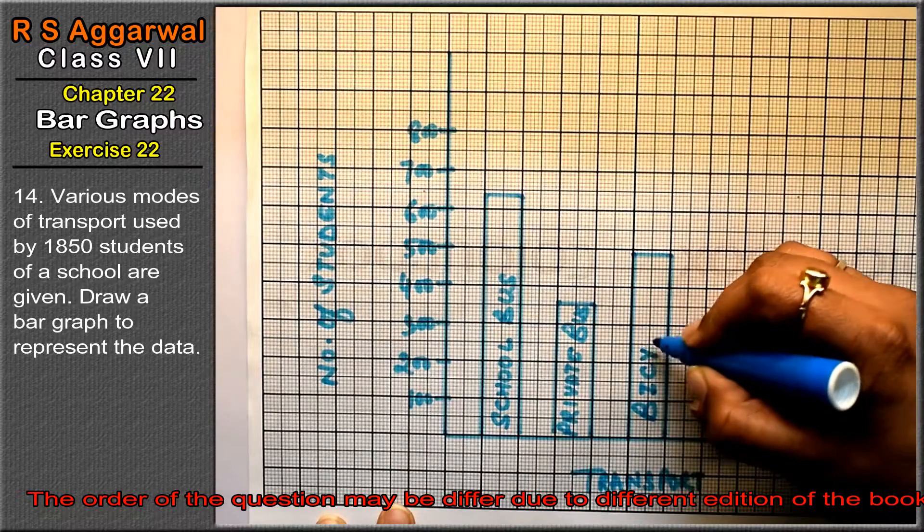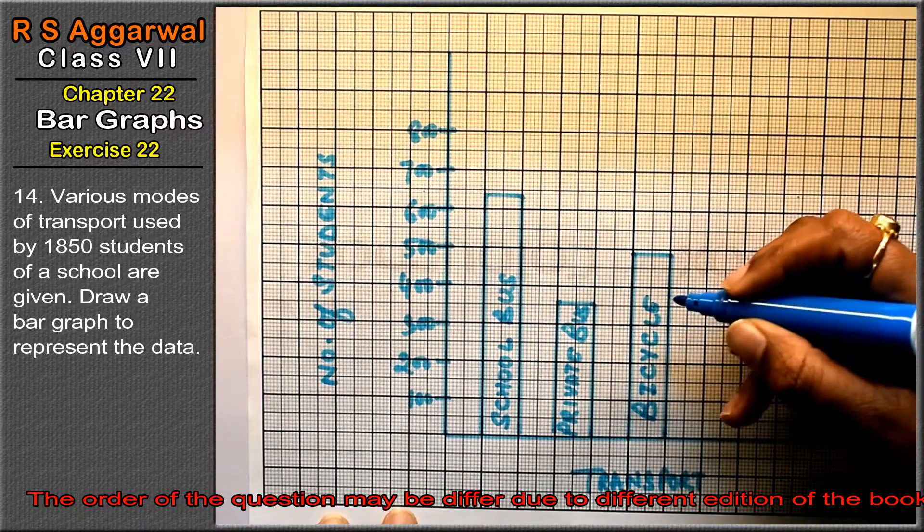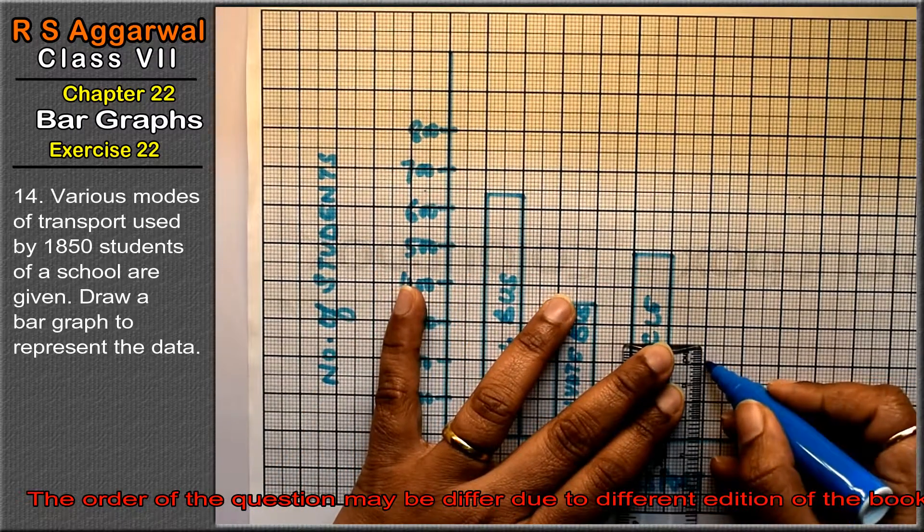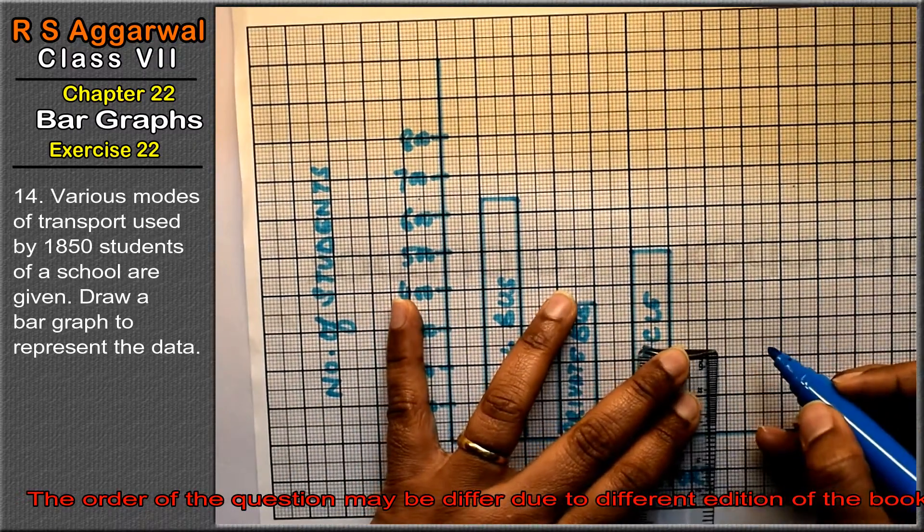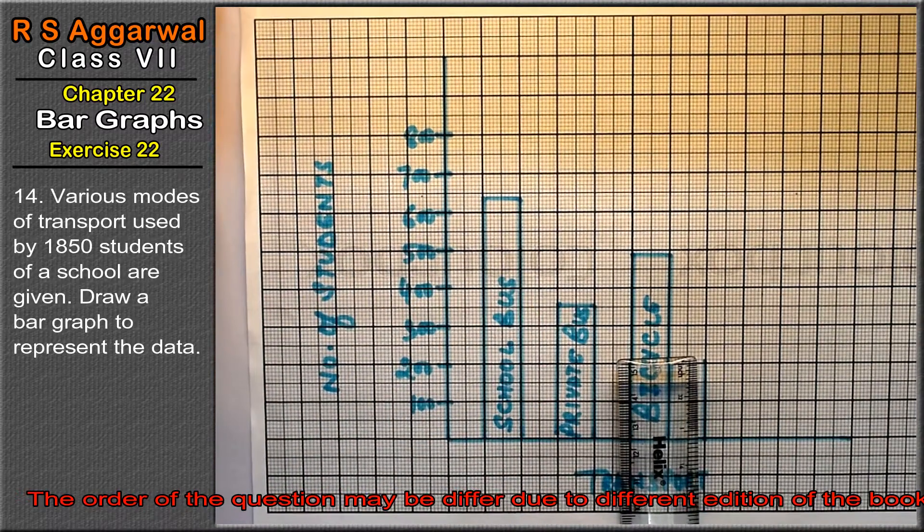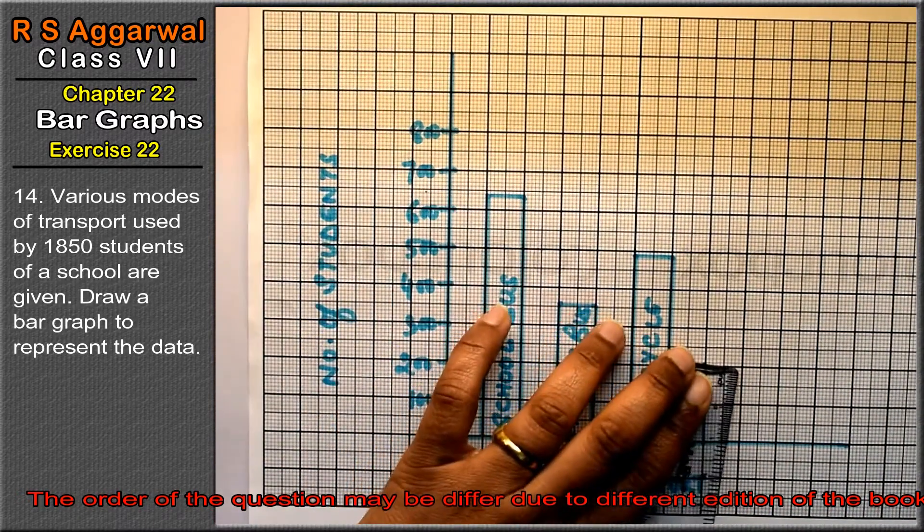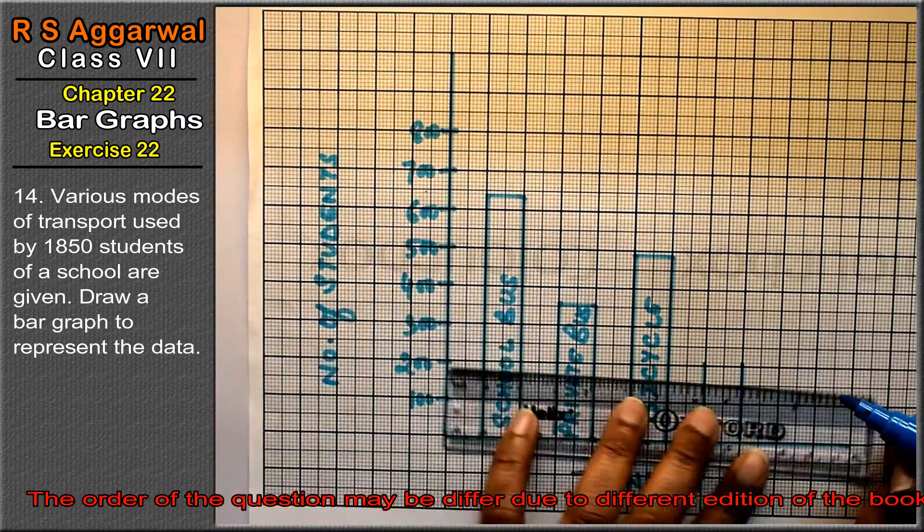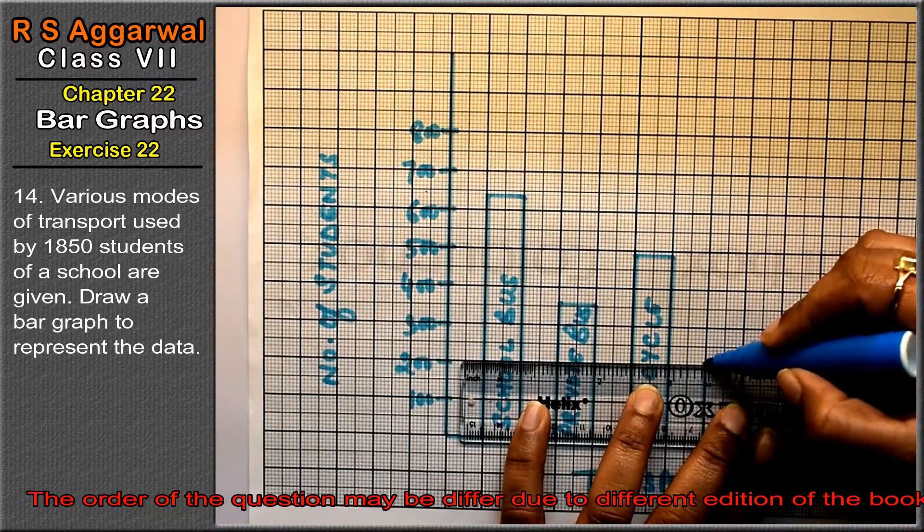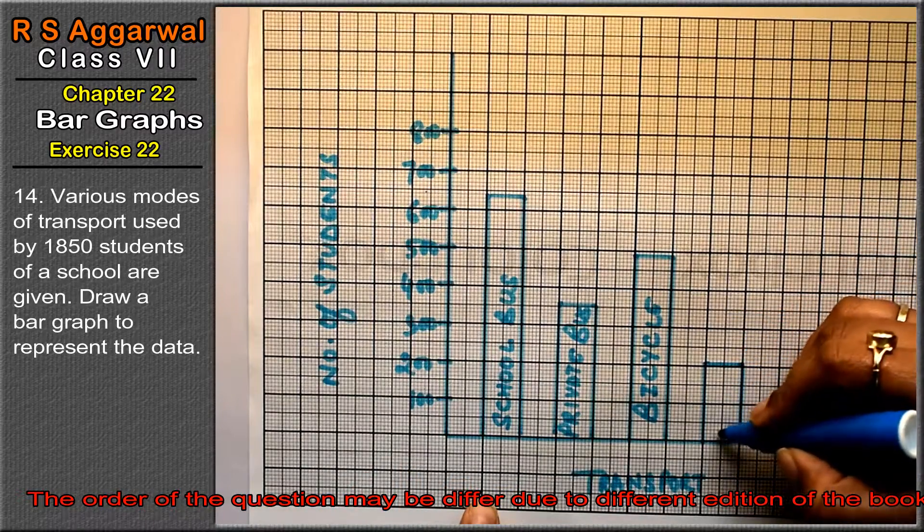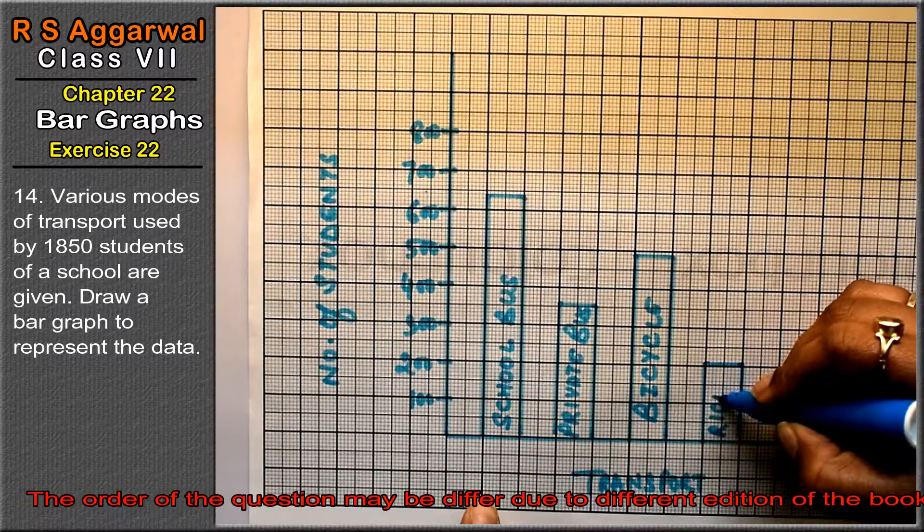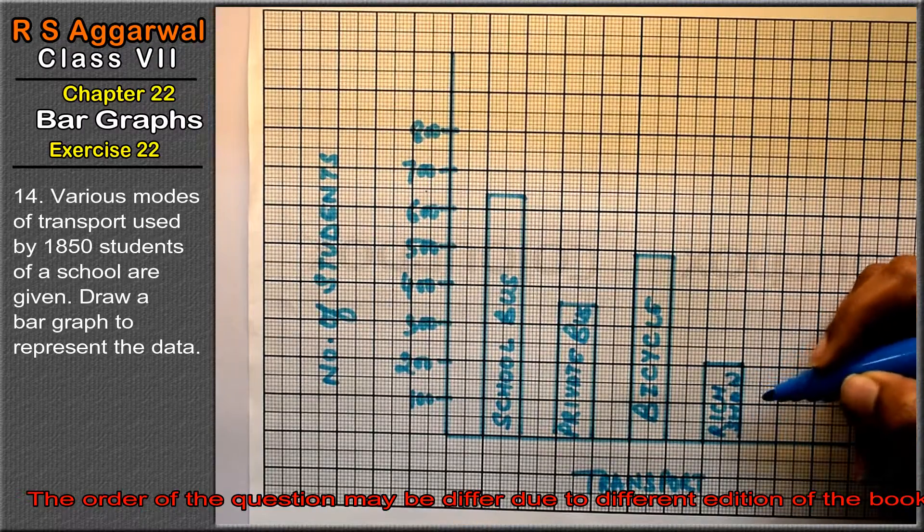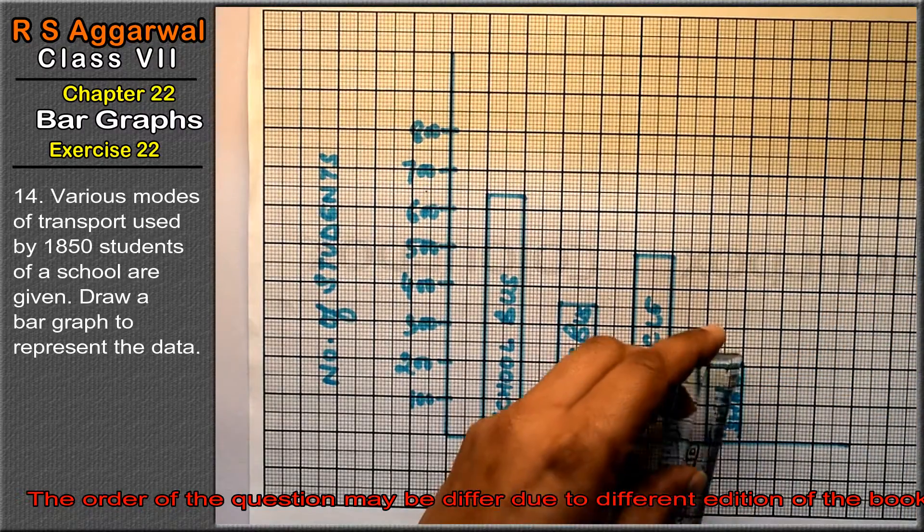Next is rickshaw, 21 blocks. This is rickshaw. Next is by foot, 15 blocks.